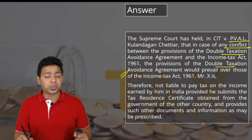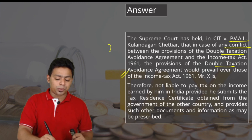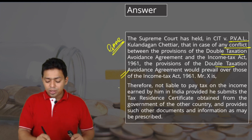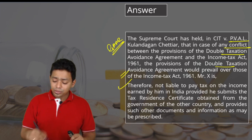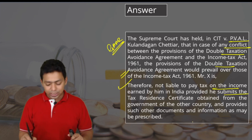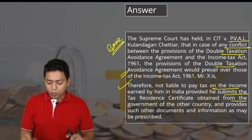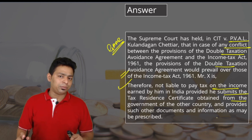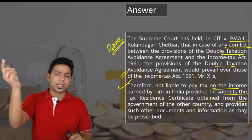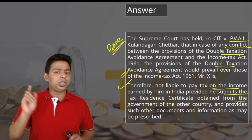DTAA has overriding power over the Income Tax Act, but it cannot override the provisions of GAAR — GAAR overrides DTAA. Therefore, Mr. X is not liable to pay tax on income earned in India, provided he submits the Tax Residency Certificate obtained from the government of the other country and provides such other documents and information as may be prescribed in Form 10F. He can pay tax in the residence country, not in the source country, according to DTAA conditions.